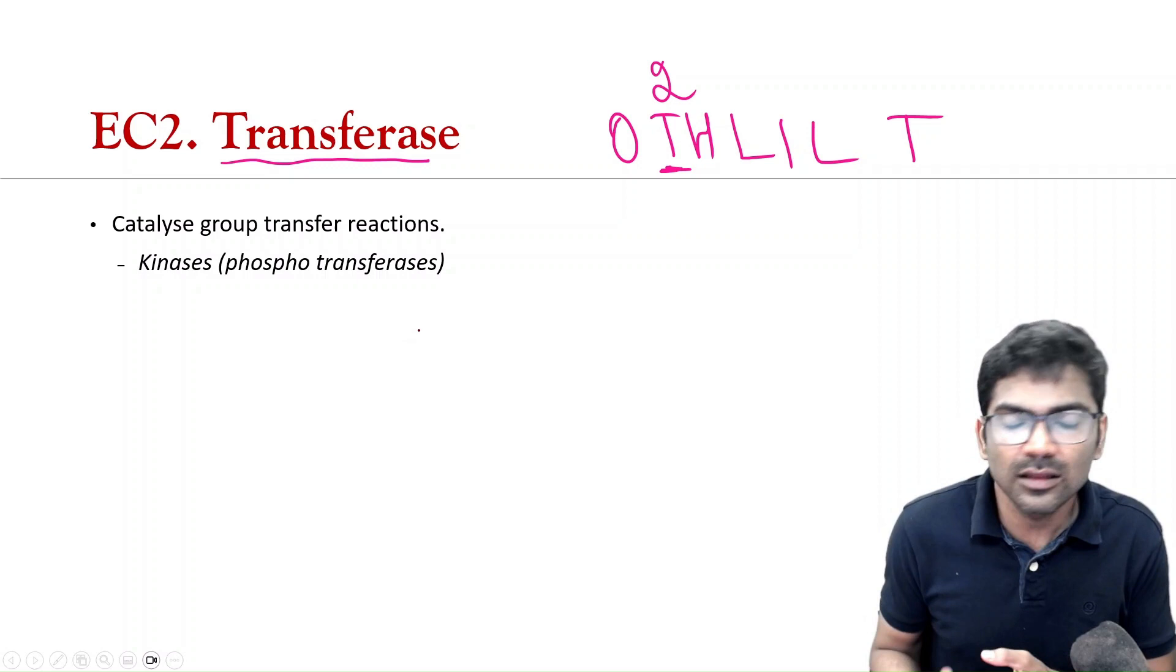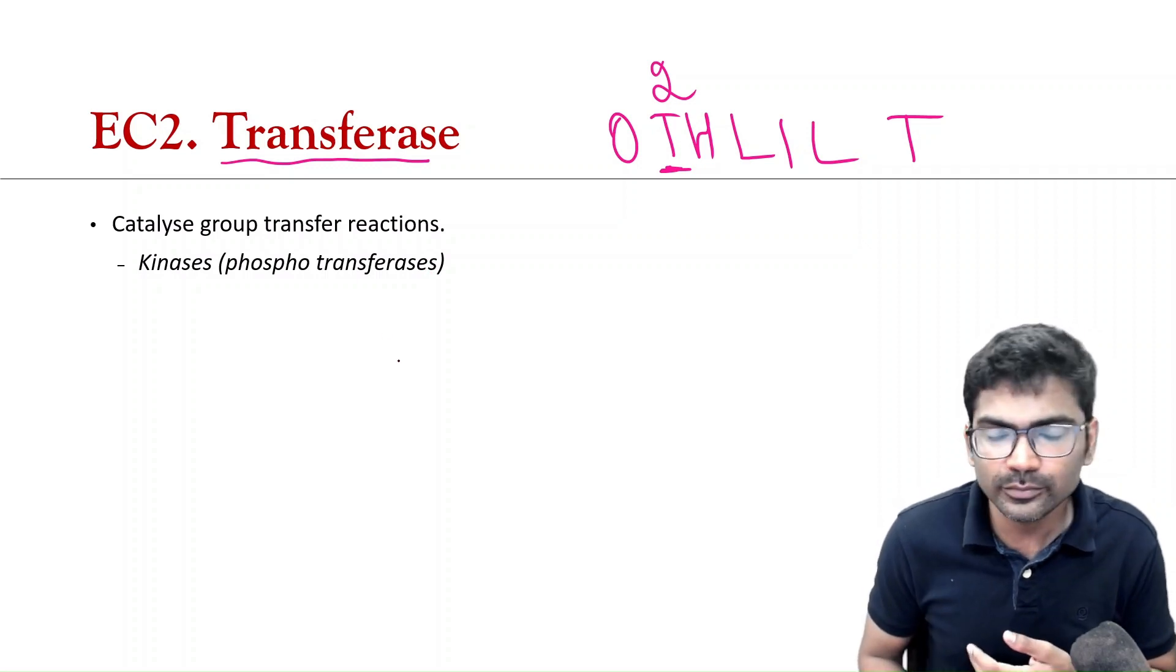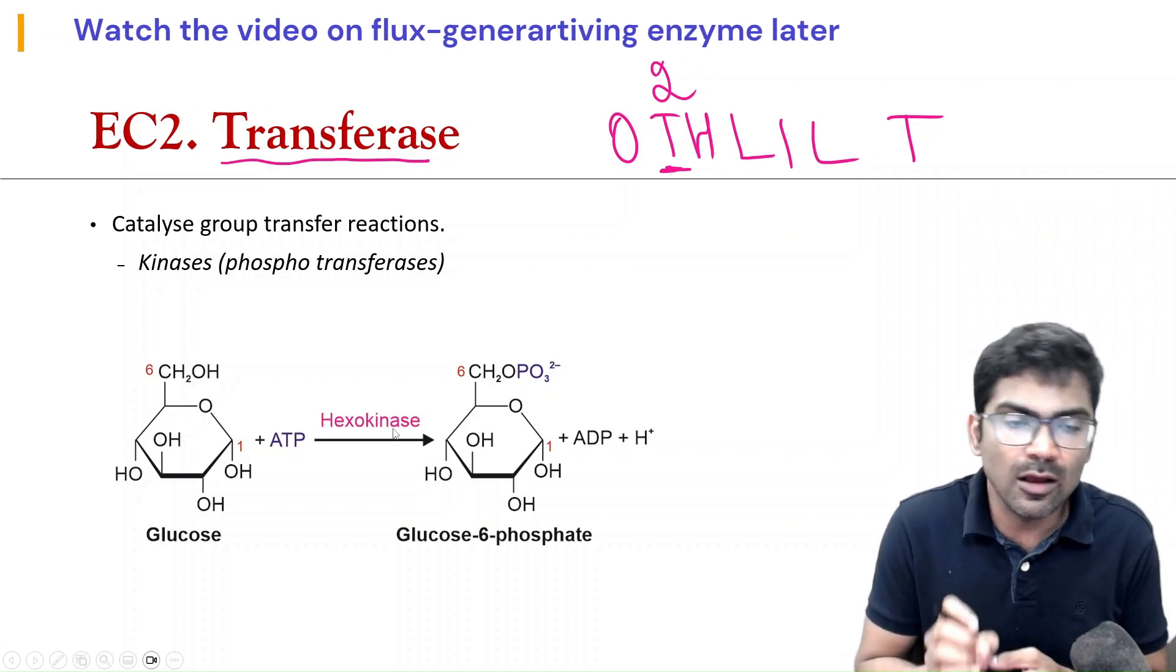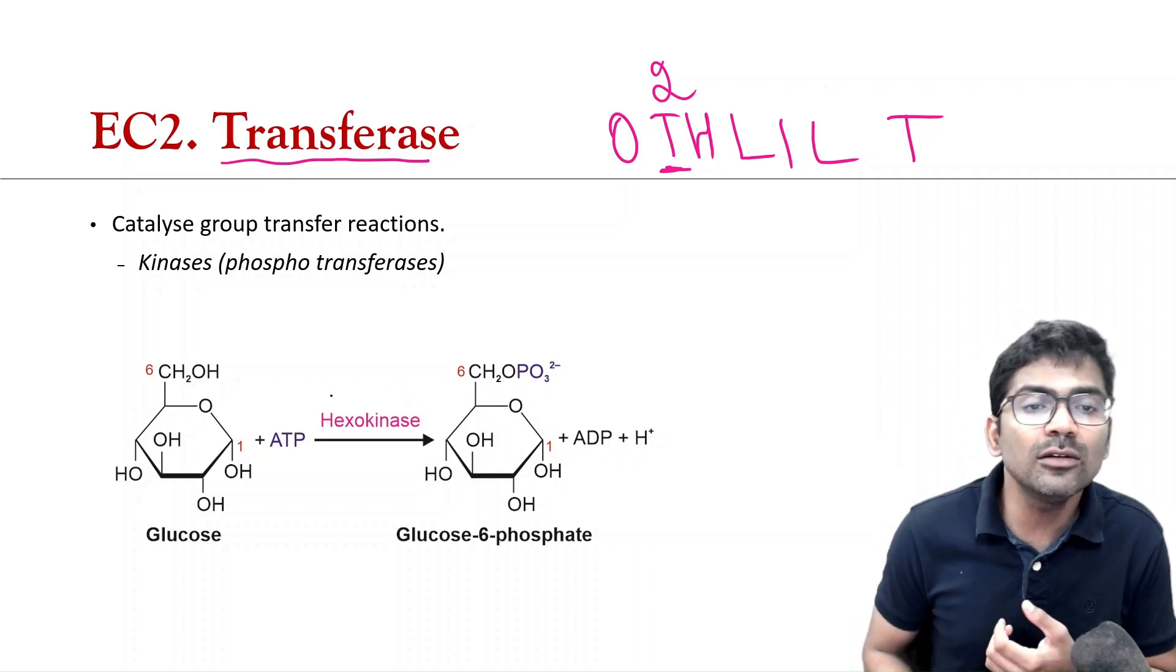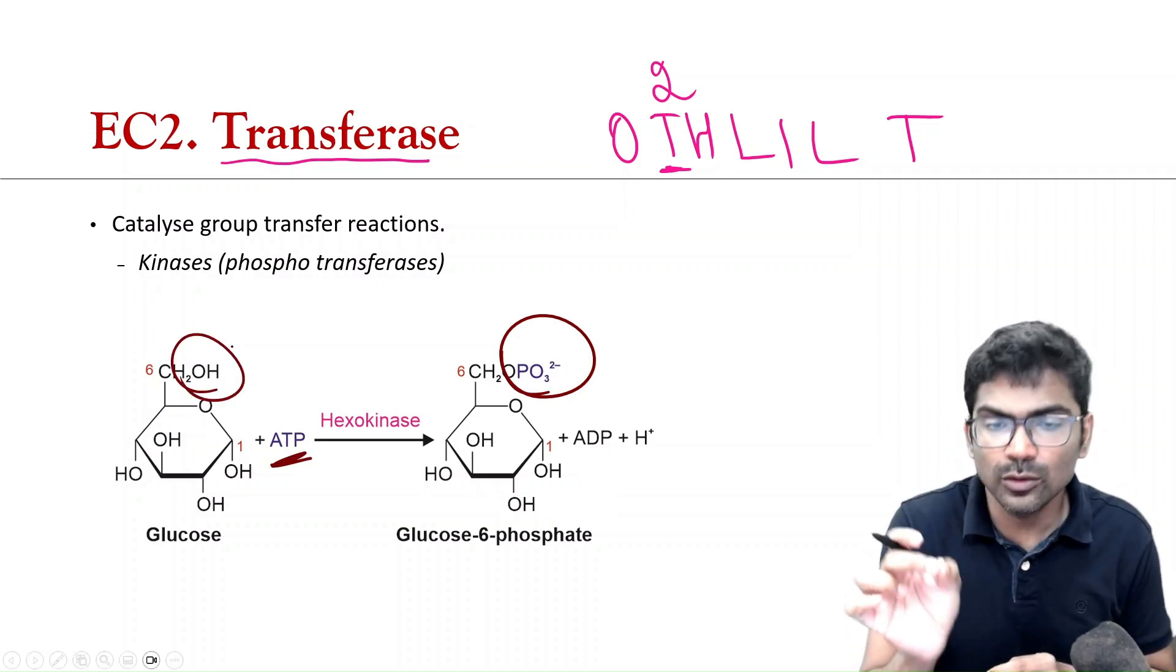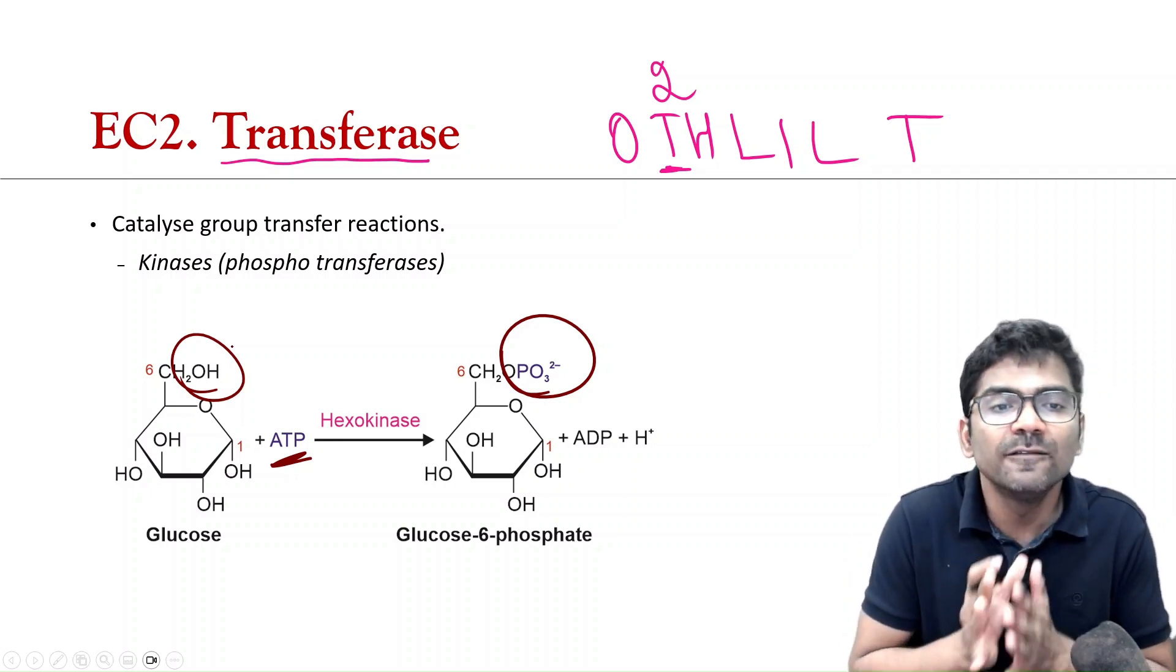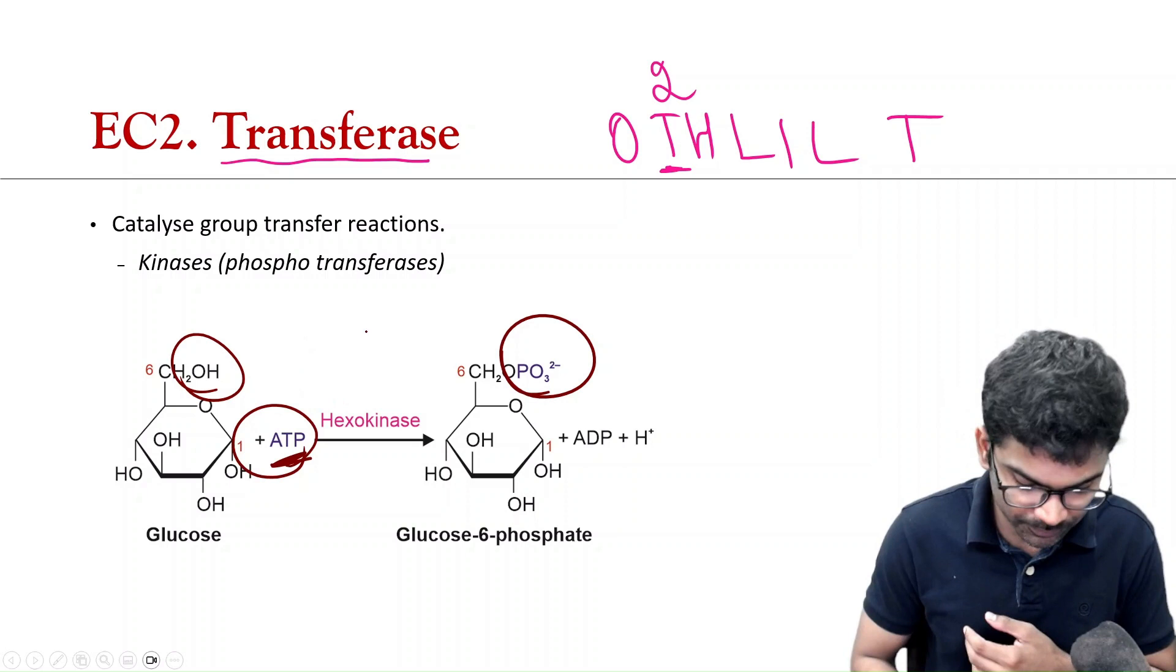Transferase, it catalyzes the transfer of groups like phosphate group, amino group and all. So, let us look at one example, hexokinase, the first and flux generating enzyme of glycolysis. So, this enzyme is a transferase. So, what is it transferring? It is transferring phosphoryl group from ATP to the OH group of glucose in the sixth carbon.